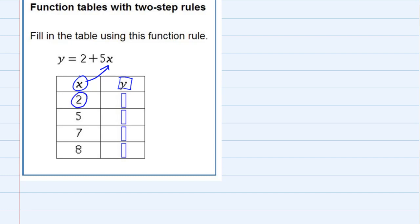Starting off with the 2, if we replace that in the function, I would have y equals 2 plus 5 times x is going to be 5 times 2, because we're replacing the x with the 2. And then if we were to simplify this, we would need to do the multiplication first, so that would be 2 plus 5 times 2 is 10, and 2 plus 10, that would give us 12. So when I plugged in the 2, I have a 12.